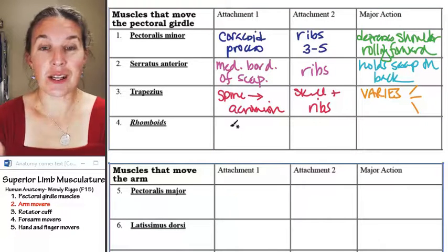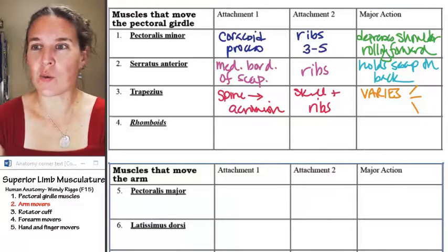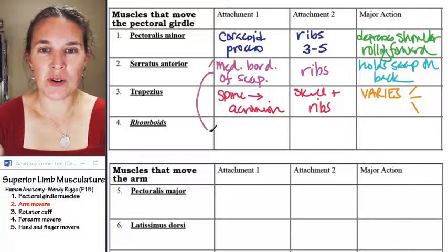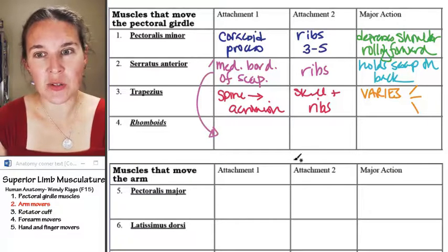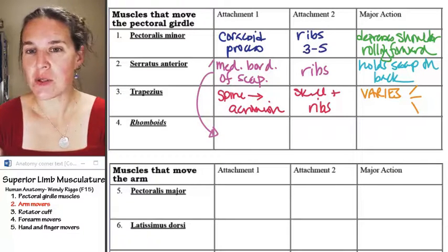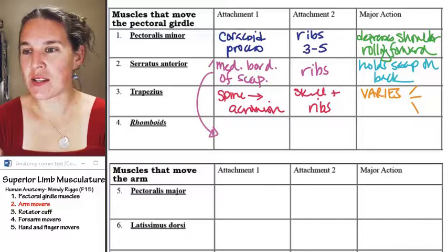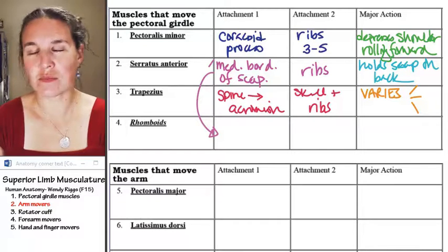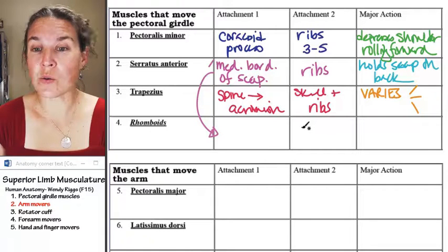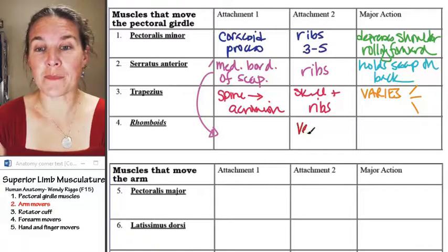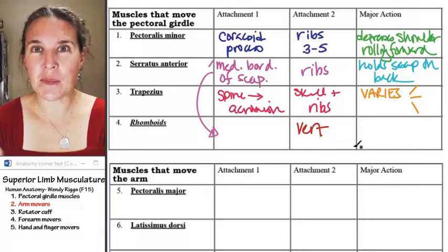Rhomboids. Who are we attaching to? Remember this? We were on, I'm going to do it in the same color. Look. Medial border of the scapula. Nice. And where was my other attachment? My other attachment was this one that I miswrote.